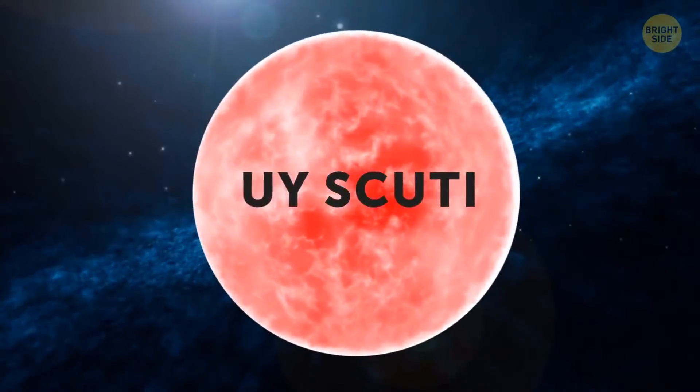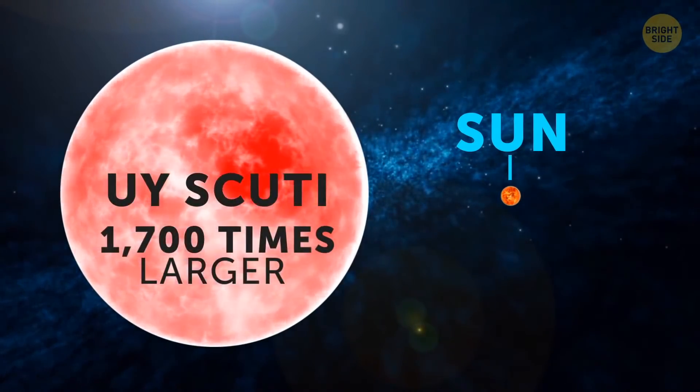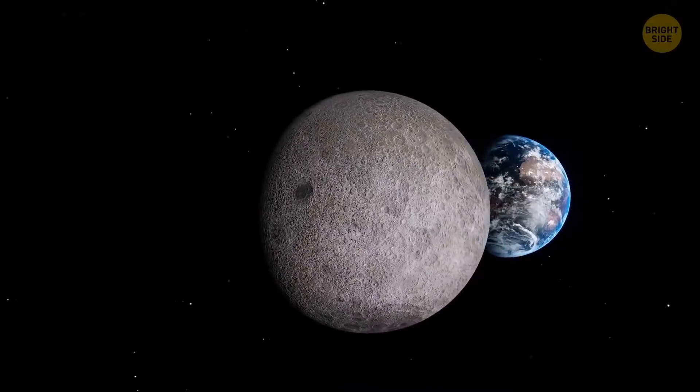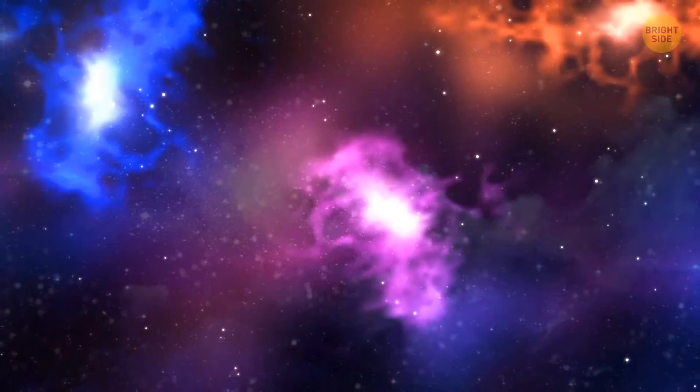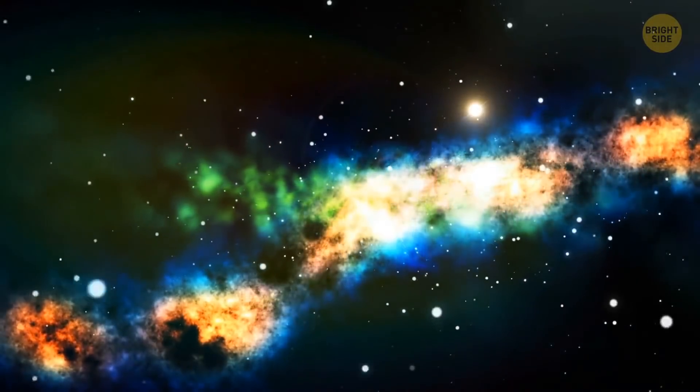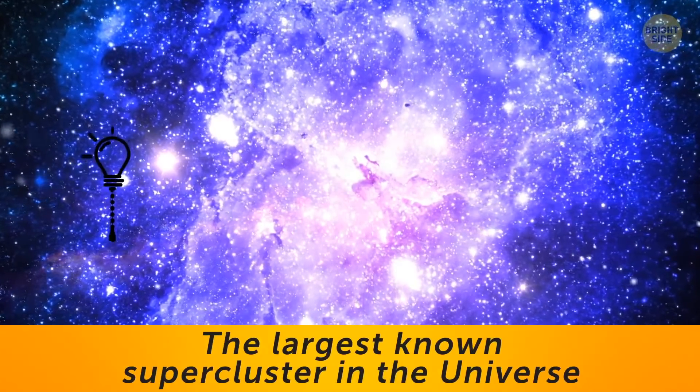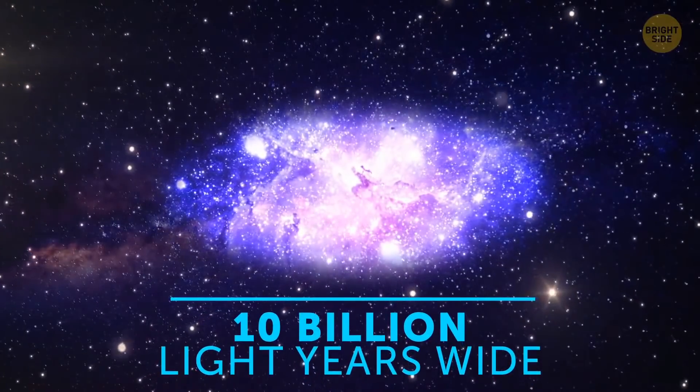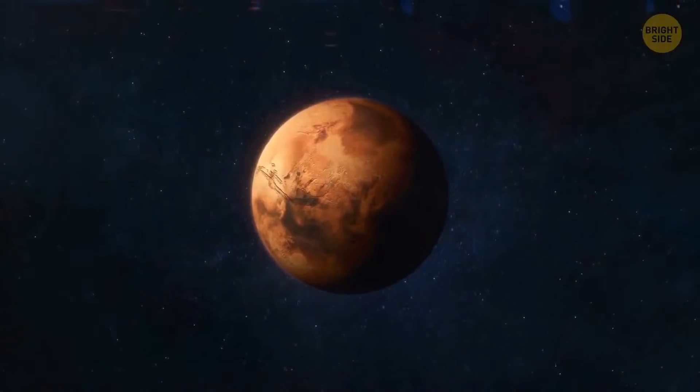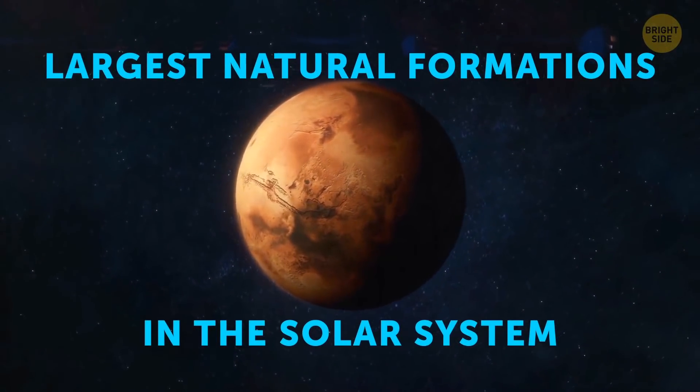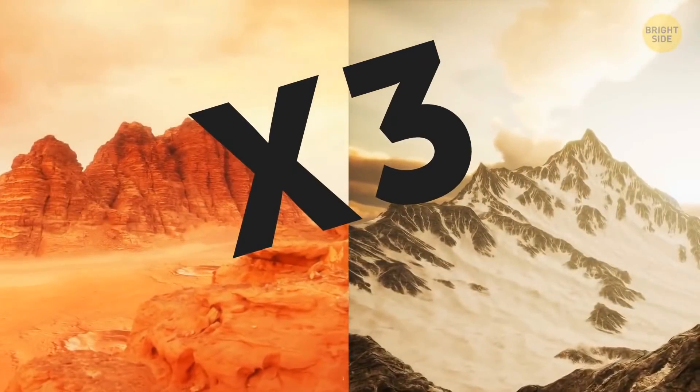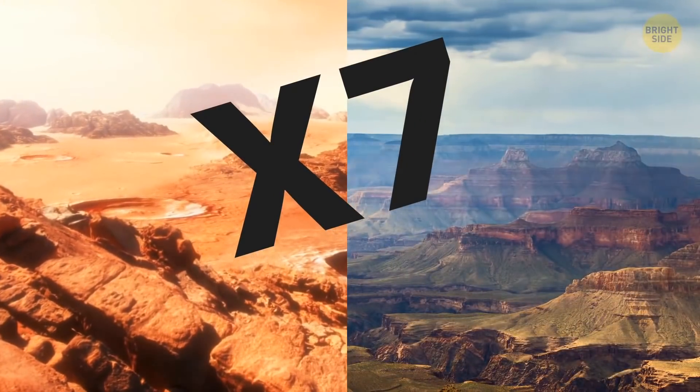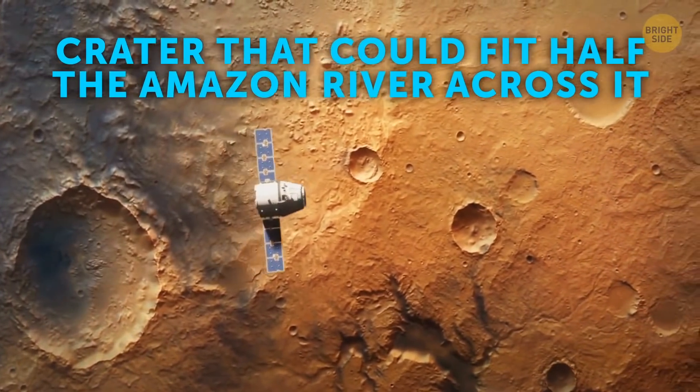The Sun can fit about a million Earths inside it. But there's a star called UY Scuti that's about 1,700 times larger than the Sun. Almost everything in space is connected with everything else by gravity. Star systems are part of galaxies, galaxies are part of clusters, and clusters are parts of superclusters. The largest known supercluster in the universe is the Hercules-Corona-Borealis Great Wall. That's a name. It's more than 10 billion light-years wide. Mars has the largest natural formations in the solar system. The mountain three times taller than Everest, the canyon almost seven times longer than the Grand Canyon, and the crater that could fit half the Amazon River across it.